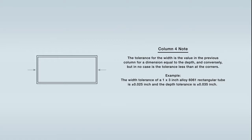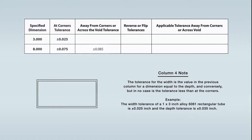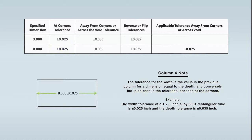We need to reverse these two tolerances because the 3 inch dimension applies across the larger 8 inch width, so a larger tolerance is needed. The plus or minus 0.085 inches away-from-corner tolerance for the 8 inch width dimension will now apply to the 3 inch depth dimension. For the 8 inch width dimension, the away-from-corner tolerance becomes plus or minus 0.035 inches. However, this is smaller than the plus or minus 0.075 inches tolerance at the corners, so the same plus or minus 0.075 inches tolerance will apply. The tolerance away from the corner needs to be equal to or greater than the dimension tolerance at the corners. The final tolerances are 3 inches plus or minus 0.085 and 8 inches plus or minus 0.075.